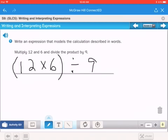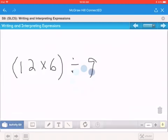By 9. So we're dividing by 9. So it would be 12 times 6. You don't need the parentheses, but it just helps to know what to do first. And then divide that answer by 9.